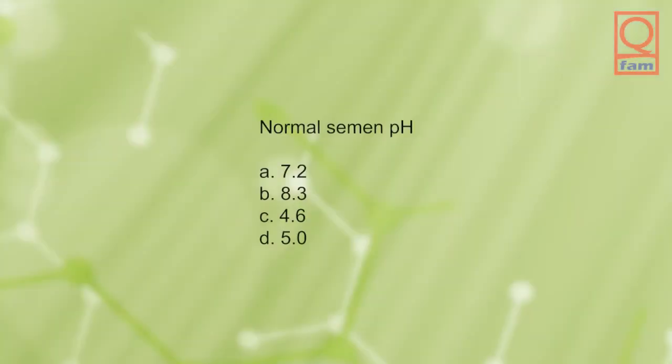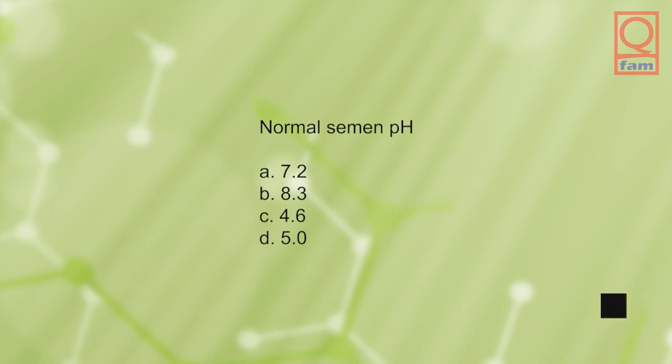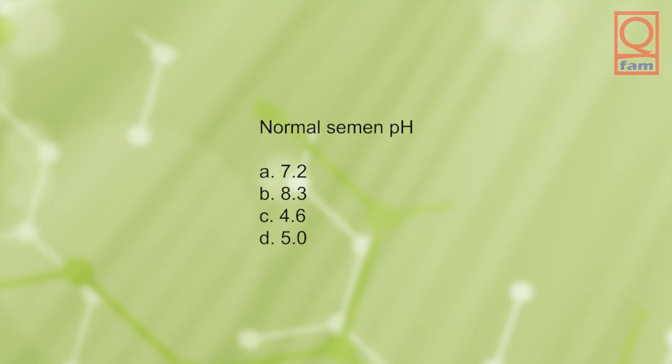Normal semen pH: A) 7.2, B) 8.3, C) 4.6, D) 5.0. The answer is A, 7.2.